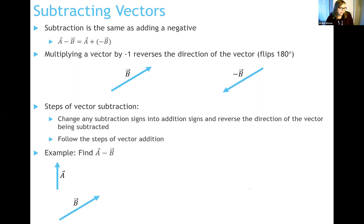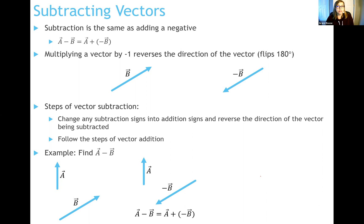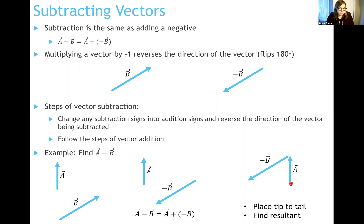Let's do an example. I have vectors A and B, and I want to find A minus B, which is the same as A plus negative B. I translate vector A, then find negative B — which points opposite to B, labeled as negative B, not B. Now I add those two vectors together by arranging them tip to tail, then draw the resultant from the tail of my first vector to the tip of my last vector. That is our resultant vector for A minus B.